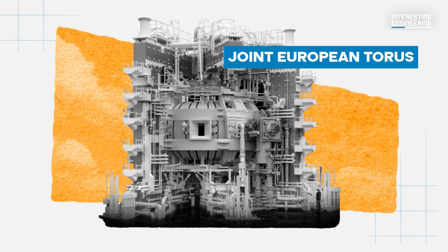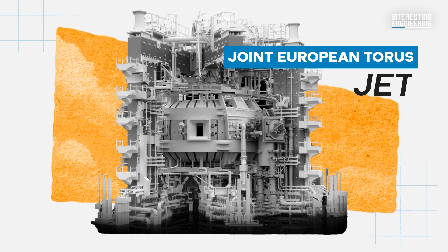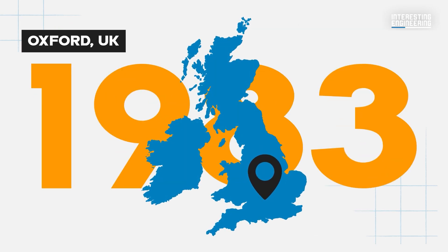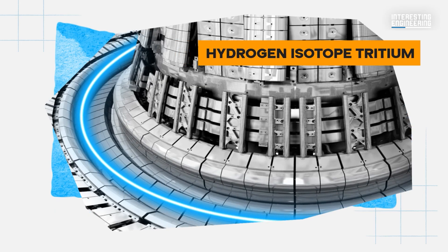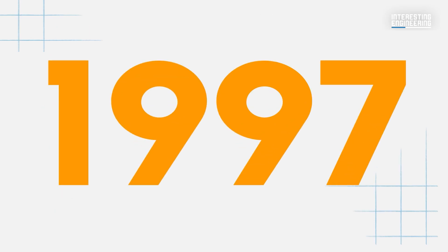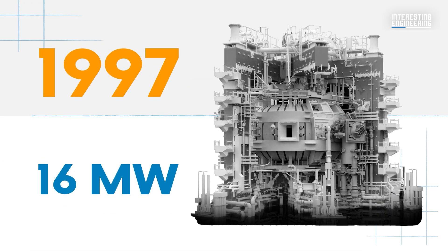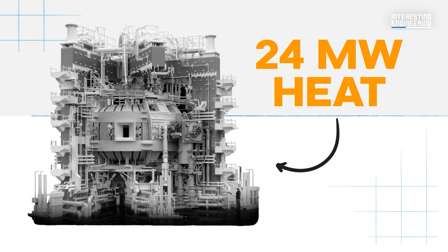The Joint European Taurus, or JET, is a fusion research facility based near Oxford in the UK that began operations in 1983. It was the first fusion reactor to use hydrogen isotope tritium as a fuel and, in 1997, set a record for generating 16 megawatts of power after injecting 24 megawatts of heat into the reactor.